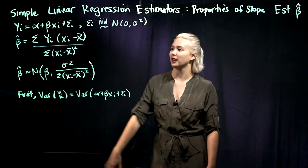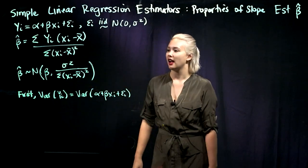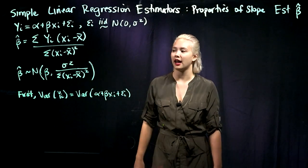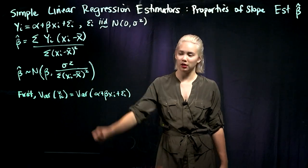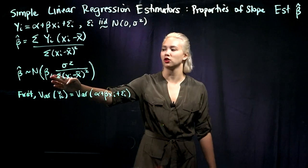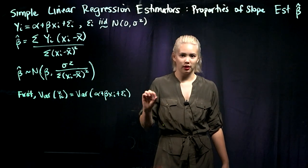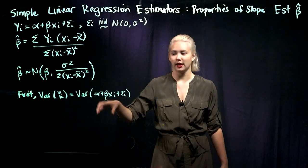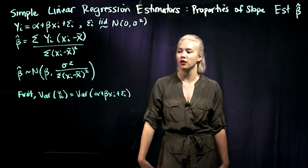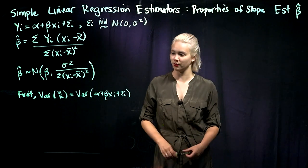The equation for beta hat is shown here, and this is what we're trying to show: that beta hat is normally distributed with this mean and this variance. We've already shown the mean. So the first thing we're going to do, just as a little aside, is show that the variance of the yi's is sigma squared.